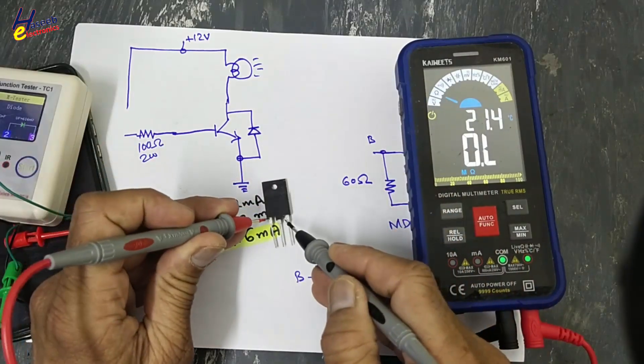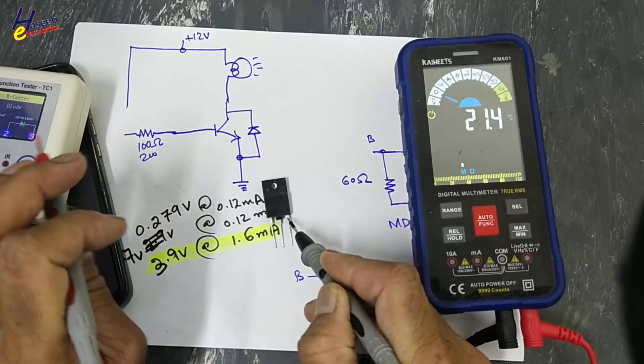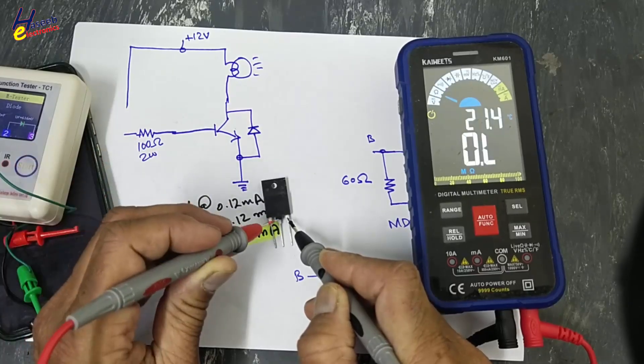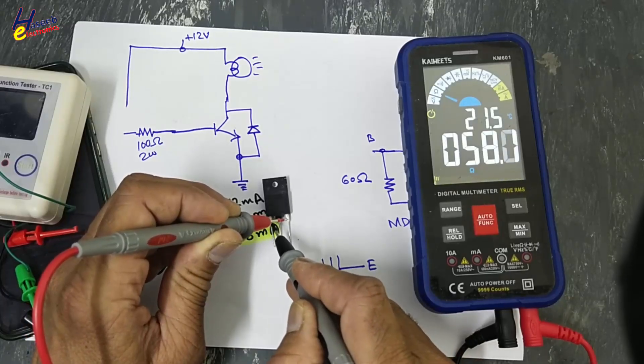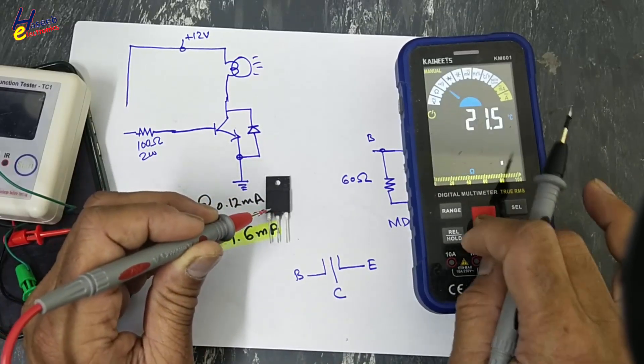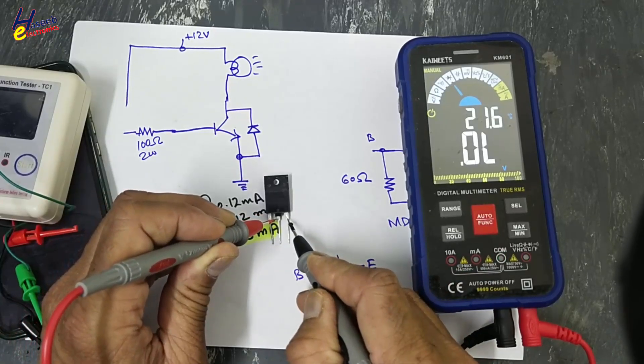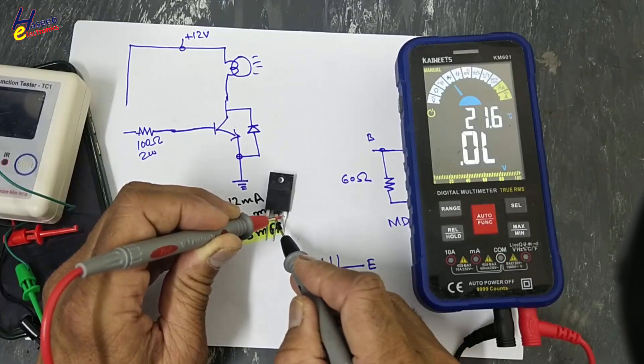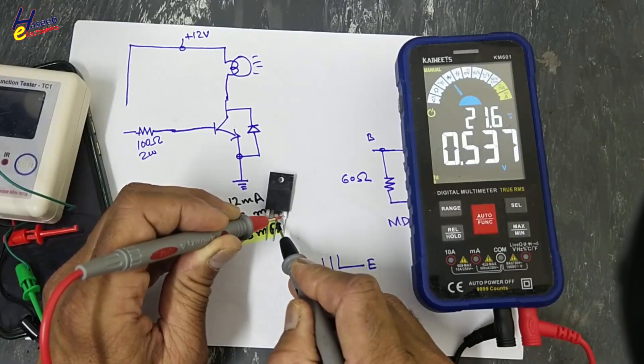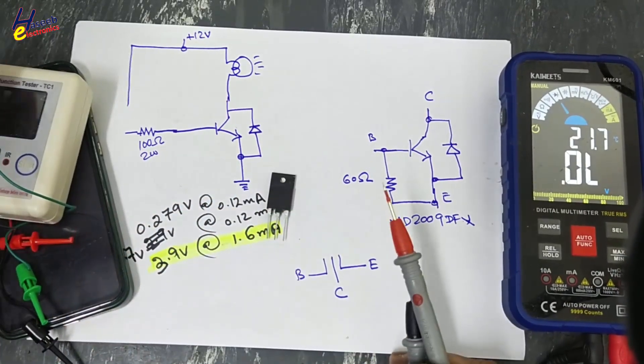This transistor, 58 ohm, it is showing 57.9, 57.7 in both directions. For forward voltage, one side open circuit, second side this diode. So this is the response of this transistor on this multifunction tester.